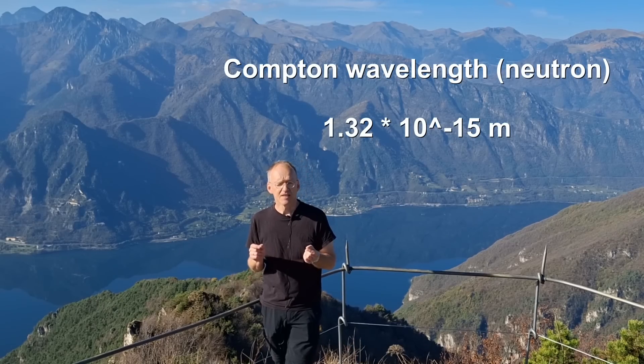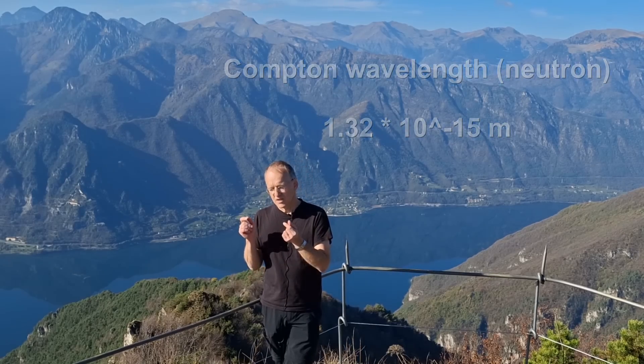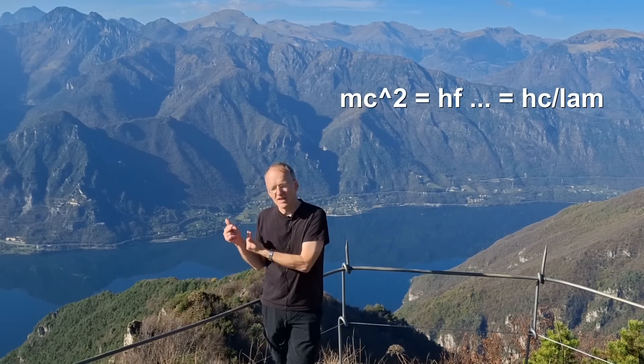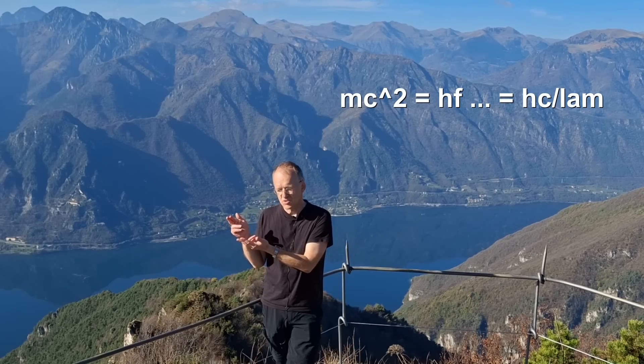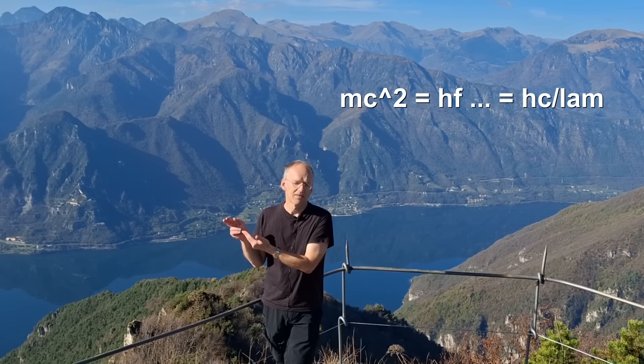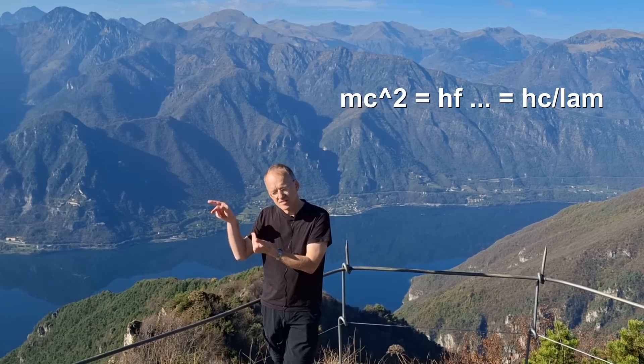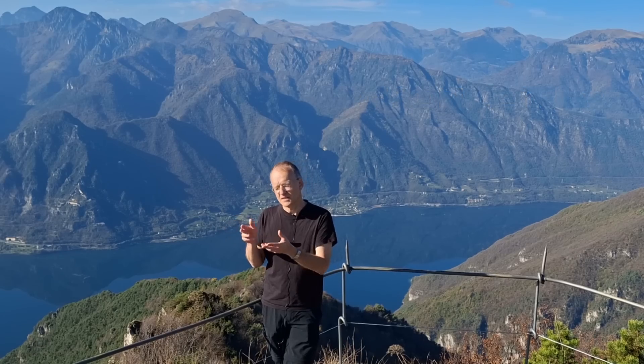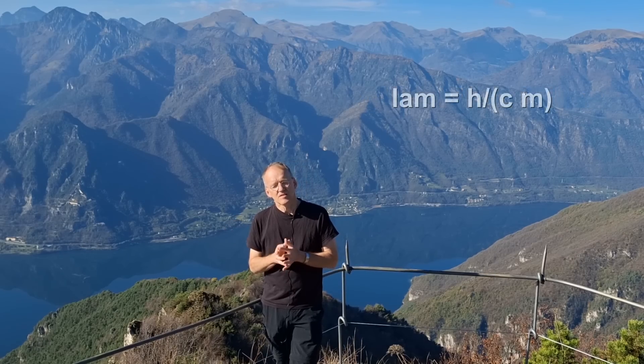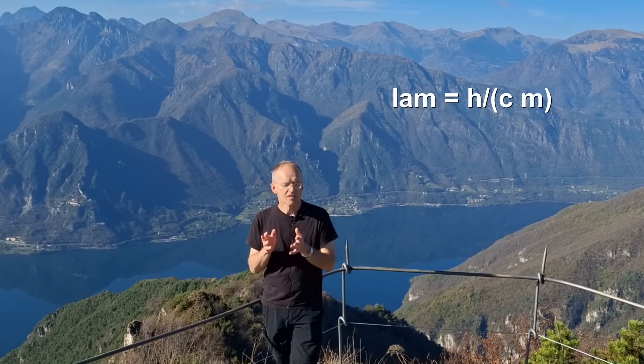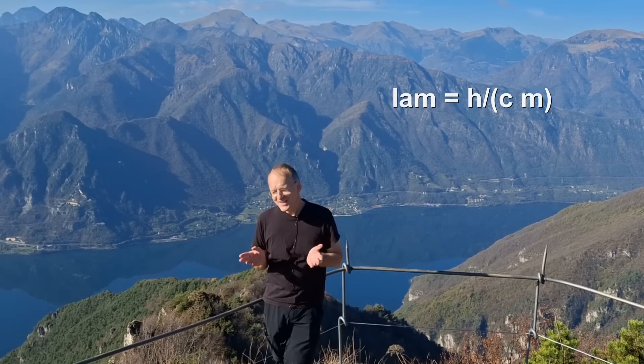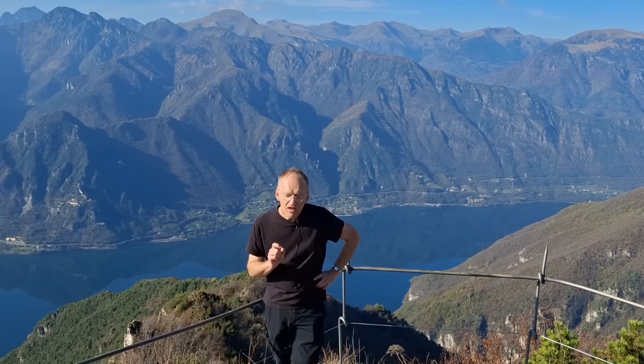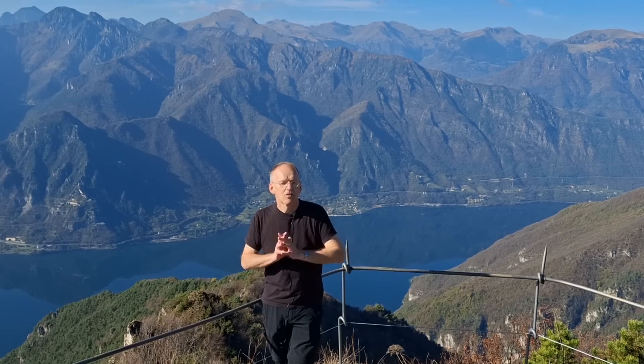Now what is the Compton wavelength? It's defined by equating Einstein's formula mc squared with a photon energy hf. Then you write hf as hc over lambda and solve for lambda to get the Compton wavelength, which is h over mc. And I think that is not circular. That is quite interesting.